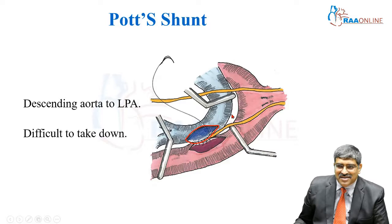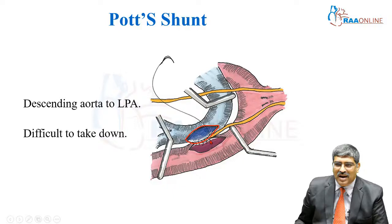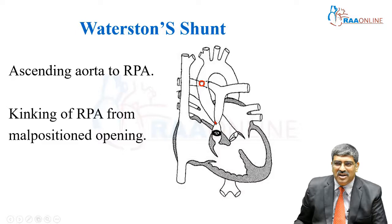Coming to the Potts shunt: this is the descending aorta and this is the left pulmonary artery. You can see a clamp placed on the descending aorta and the pulmonary artery, and a side-to-side anastomosis of the pulmonary artery to the descending thoracic aorta is being performed. This is the Potts shunt.